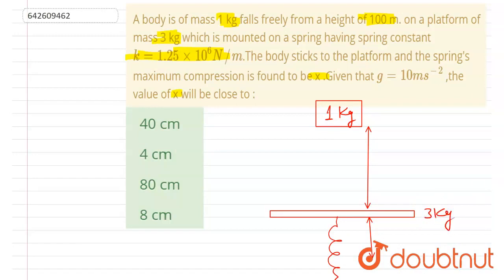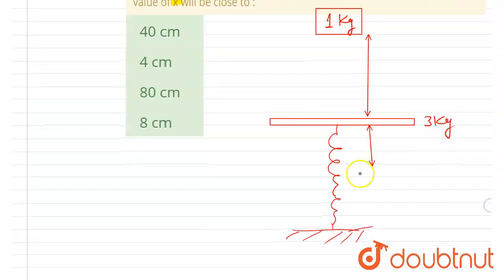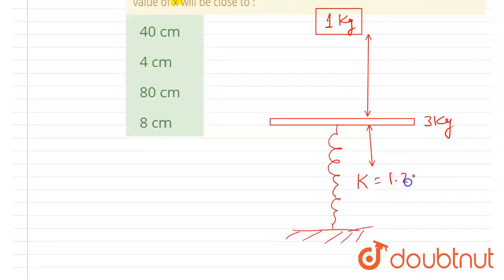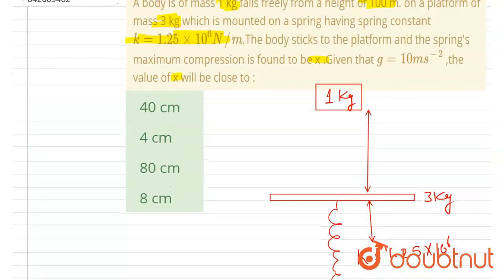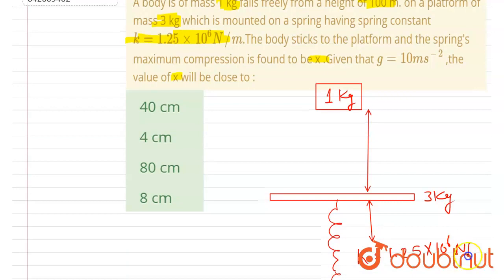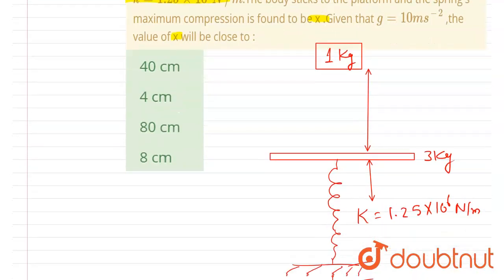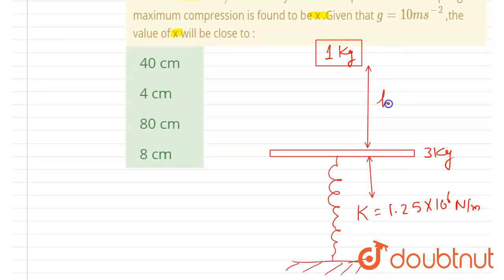And the spring constant here is 1.25 × 10^6 newton per meter, as given in the question. And this height here is 100 meters. Let's see what will happen when this 1 kg block falls on the platform: the two will move together with some velocity.